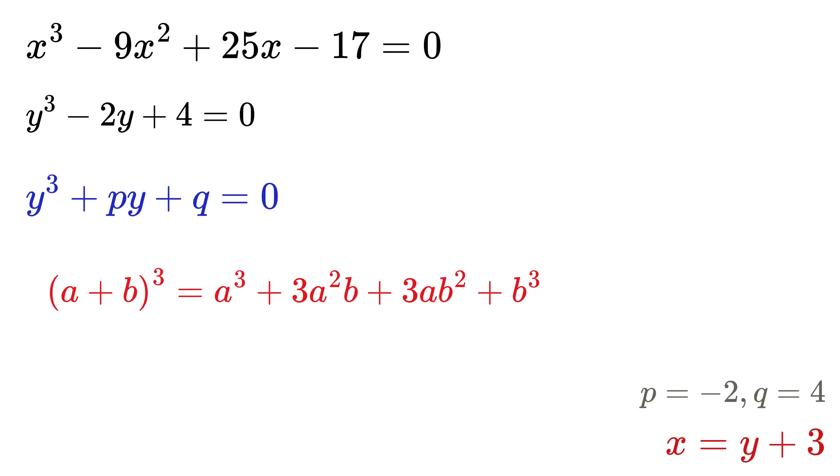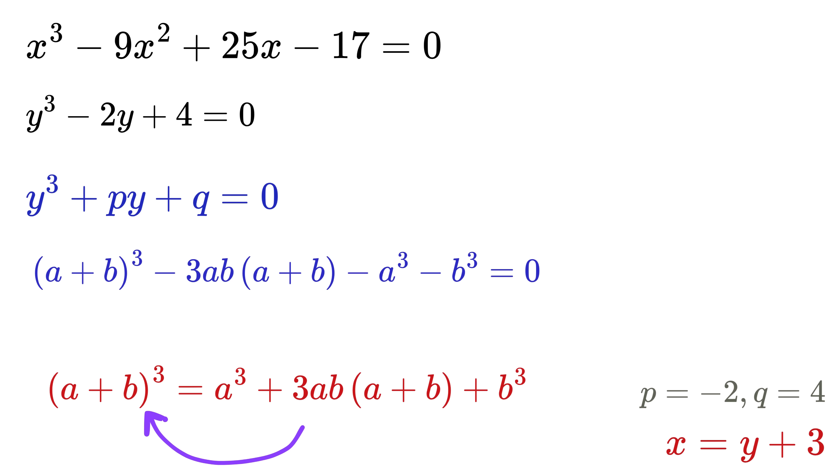Now you know that we had this identity for (a + b)³, right? We can also rewrite this as a³ + 3ab(a + b) + b³. Now take everything to the left side of this equation. We get (a + b)³ - 3ab(a + b) - a³ - b³ = 0. Oh my God! I am having goosebumps right now. If I assume y = a + b, then this equation becomes y³ - 3ab·y - a³ - b³ = 0.